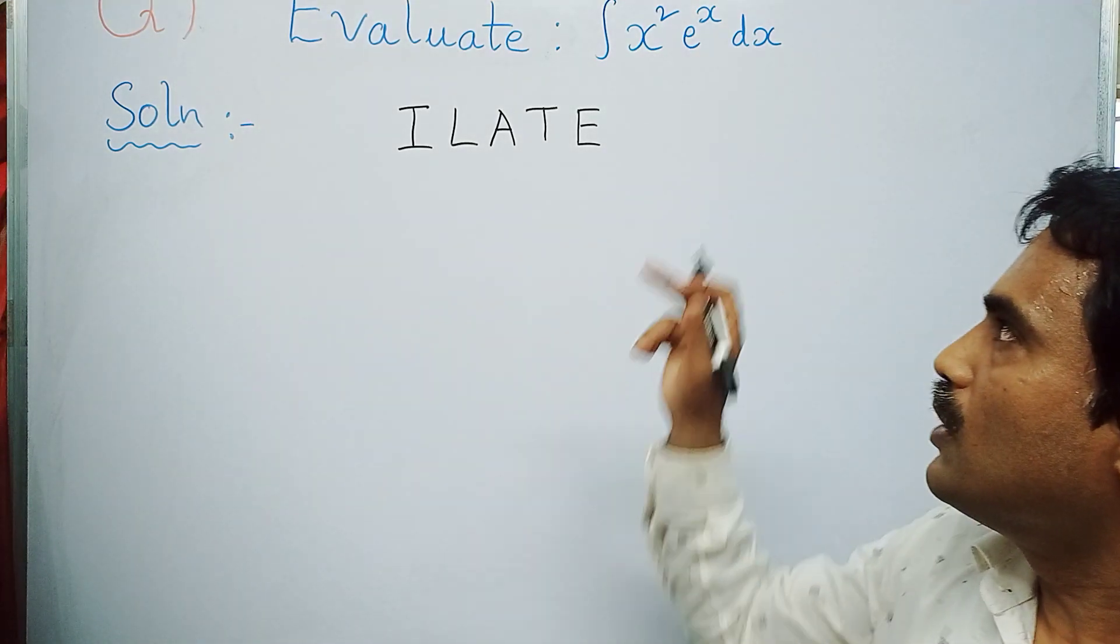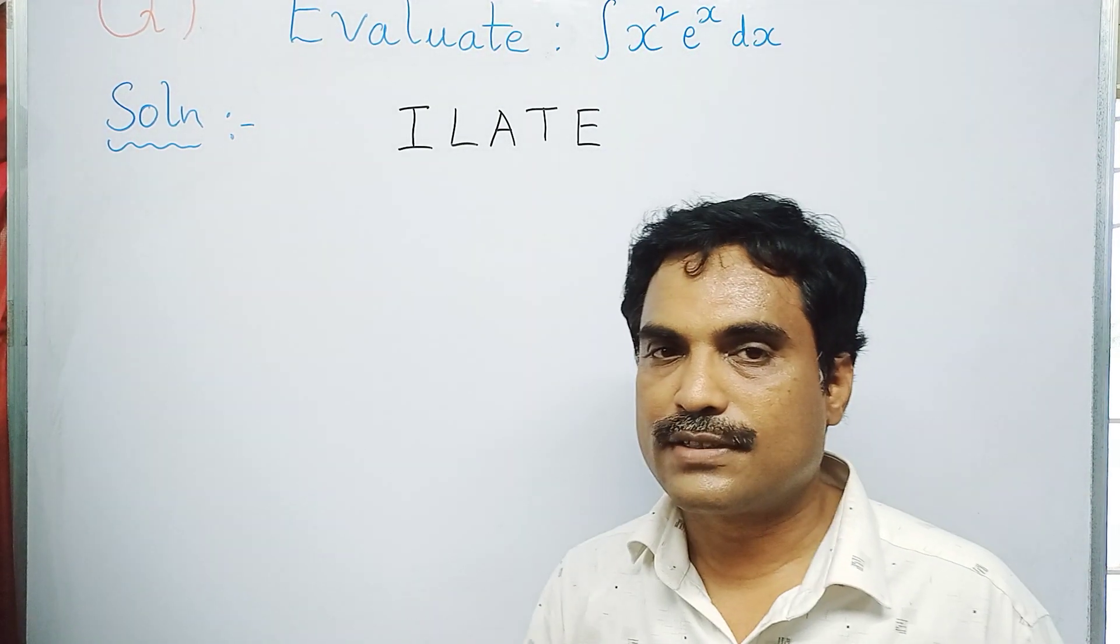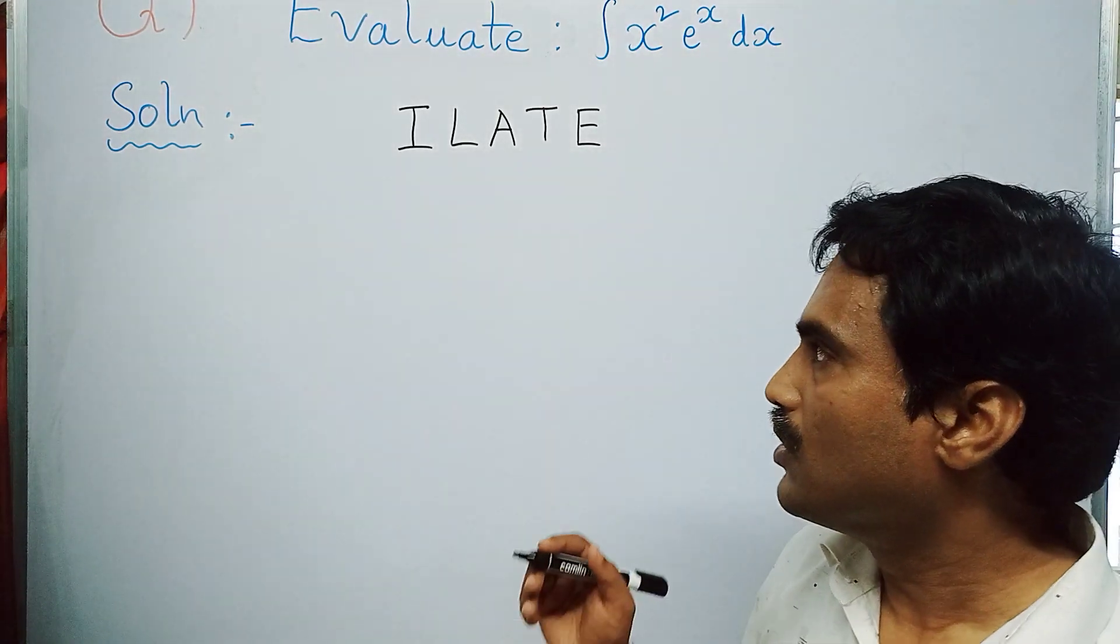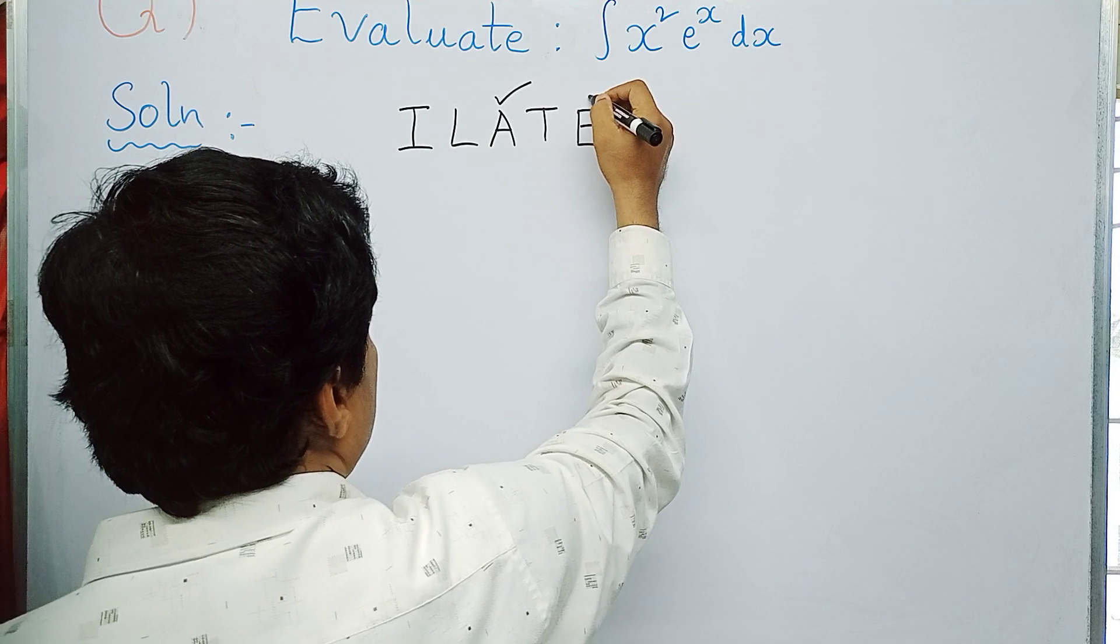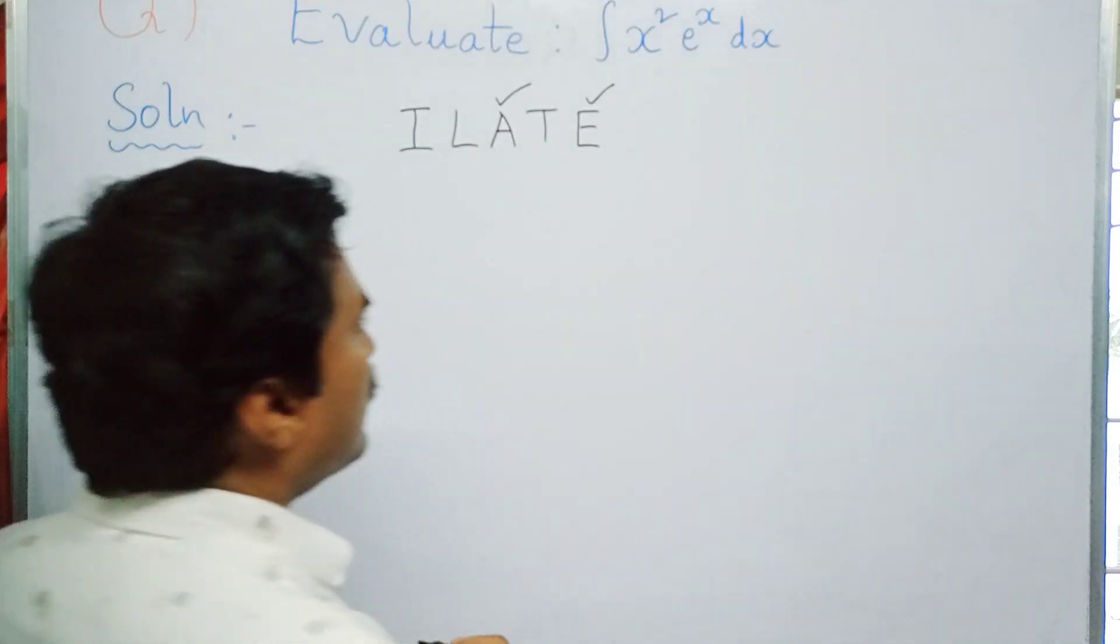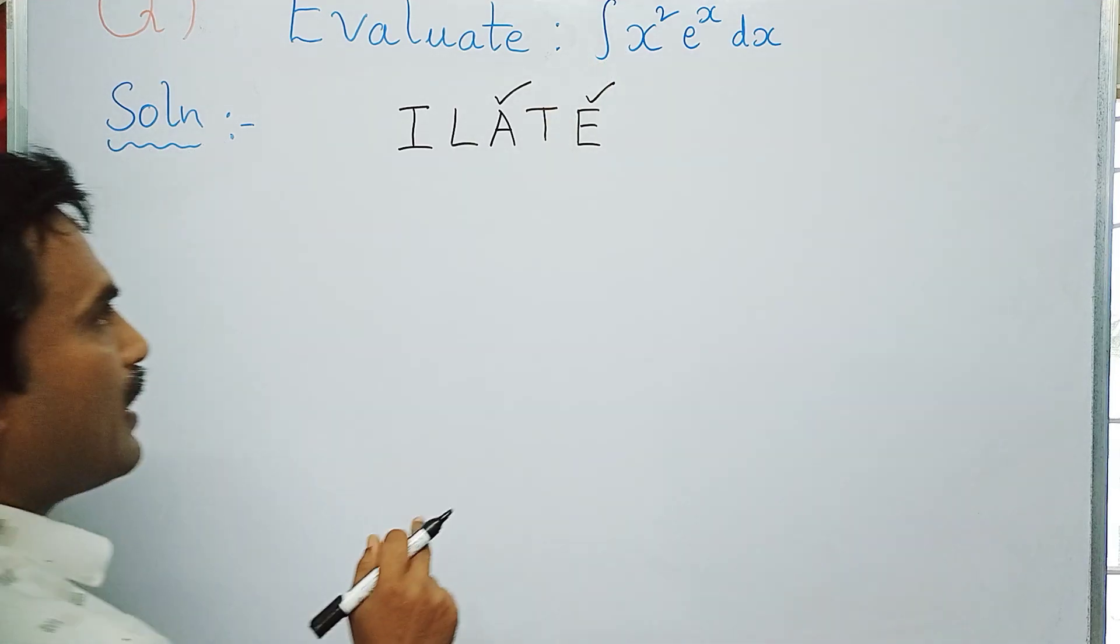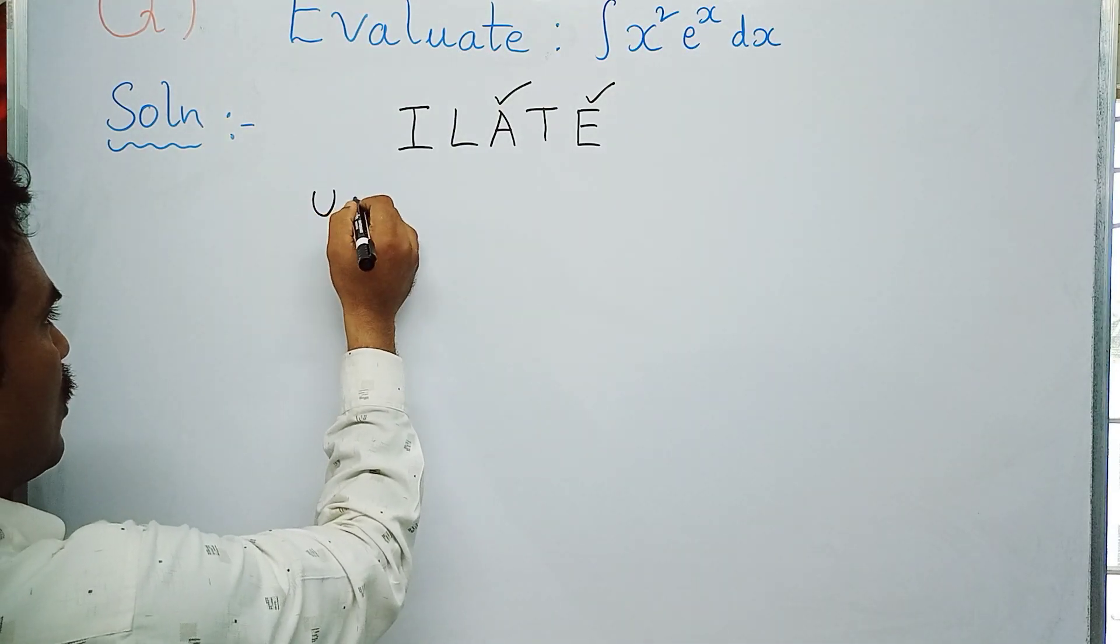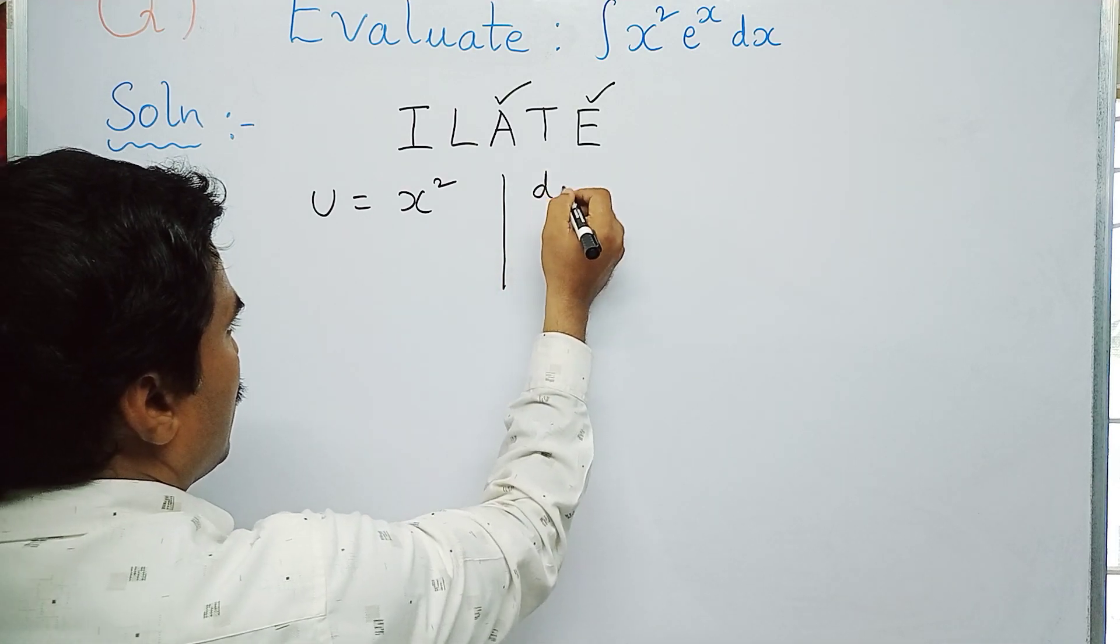If you observe the integrand, x^2 is an algebraic function, so put a tick under letter A. e^x is an exponential function, so put a tick under letter E. Since A comes first, that should be taken as u, so u = x^2. Another function should be taken as dv, that is dv = e^x dx.